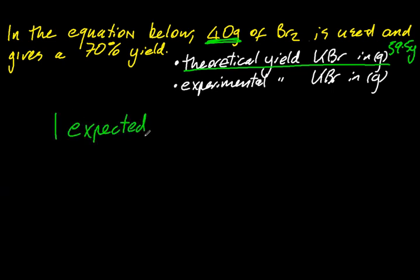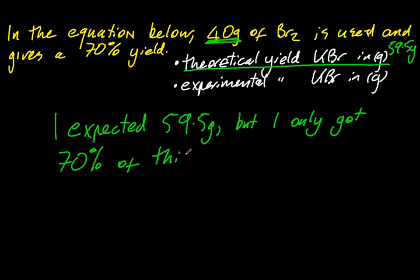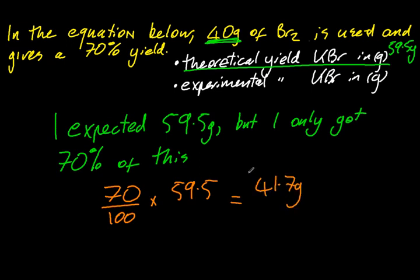Now the question said that I only got 70% of that. So I expected 59.5 grams, but I only got 70%. So 70% of 59.5 is 41.7 grams. So that's my experimental yield. Something went wrong along the way. It wasn't a perfect experiment.